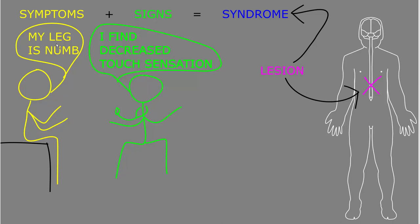So for example, a patient might say my leg feels numb, and we'd call that the subjective abnormality or the symptom. When the clinician examines the patient, they might find decreased touch sensation of the leg. We would call that an objective finding or a sign.